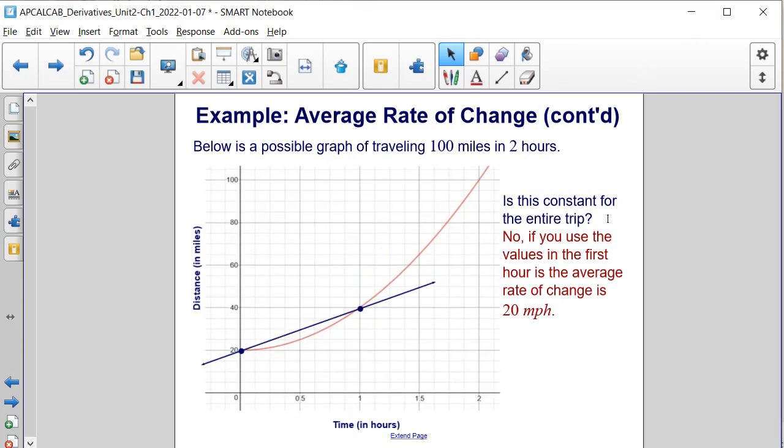Is this value constant or rate constant for the entire trip? Well, the answer here is no. If you use the values for the first hour, the average rate of change is 20 miles per hour, which is not equal to the previous answer that we found.